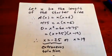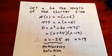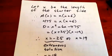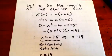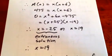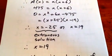We then employ the distributive property and we subtract 475 from each side and we get 0 equals x squared plus 6x minus 475, which means 0 equals x plus 25 times x minus 19.